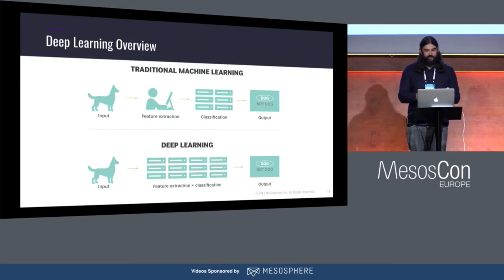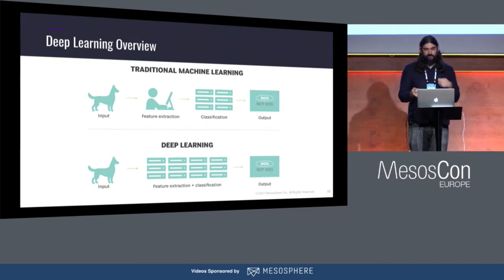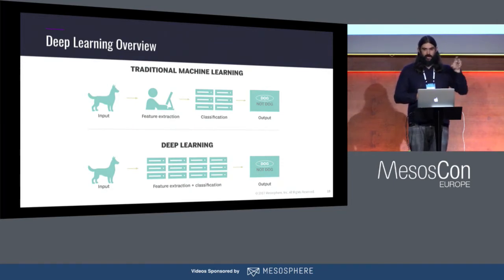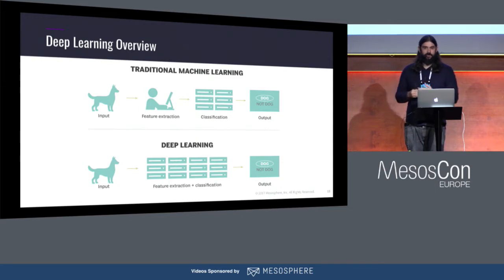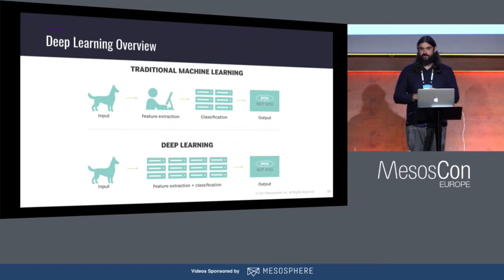What deep learning lets you do is take the human out of the equation. Instead of manually marking all the features of a dog, all you have to do is say, here's a picture and here's a bounding box around the dog. The neural network will figure out what all the features are that make up a dog and then recognize what a dog is during inference.